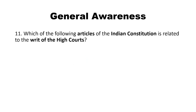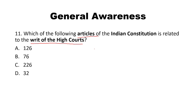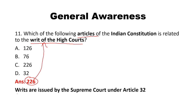Which of the following articles of the Indian Constitution is related to the Writ of the High Court? The answer is Article 226, which is related to Writs of the High Court. Writs issued by the Supreme Court are under Article 32. High Court writs fall under Article 226, Supreme Court writs under Article 32.